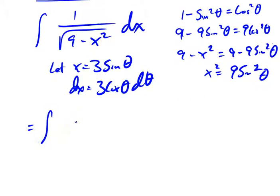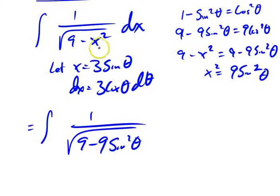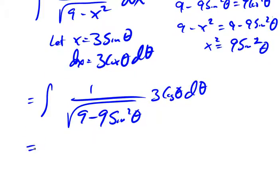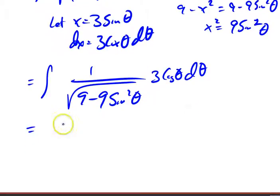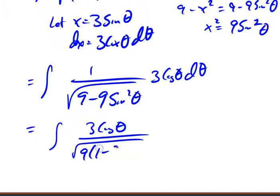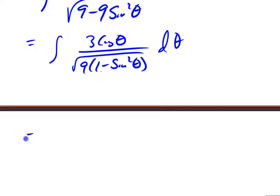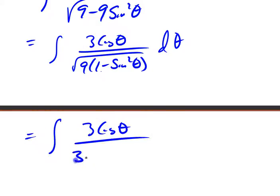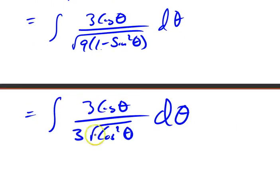Substituting all that in, I've got the integral of 1 over the square root of 9 minus 9 sine squared theta — because the whole x is squared, so the 3 is squared and the sine is squared — and dx is 3 cosine theta d theta. Initially it's a little more complicated, but in the end it'll be simpler. The 3 cosine theta is on top; on the bottom, factor the 9 out — that's 9 times 1 minus sine squared theta, which is cosine squared theta. So I've got 3 cosine theta on top and 3 times the square root of cosine squared theta on the bottom. The square root of cosine squared theta is cosine theta — everything cancels out. This is just the integral of d theta.